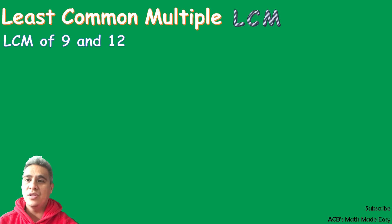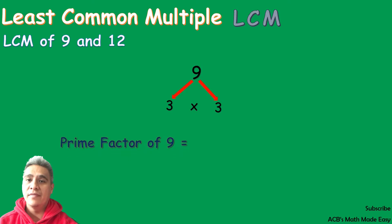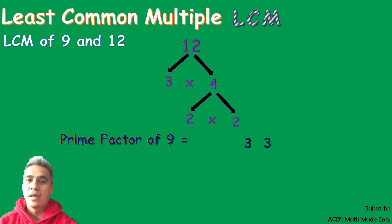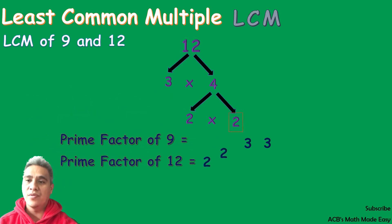You can watch the video of GCF after this. First example: what is the LCM of 9 and 12? 9 can be factored out by 3 times 3. The prime factors of 9 are 3 and 3. And 12 can be factored out by 3 times 4. Since 4 is not a prime number, 4 can still be factored out by 2 times 2. Now that we have all the prime numbers of 12, we can list them down. The prime factors of 12 are 2, 2, and 3.